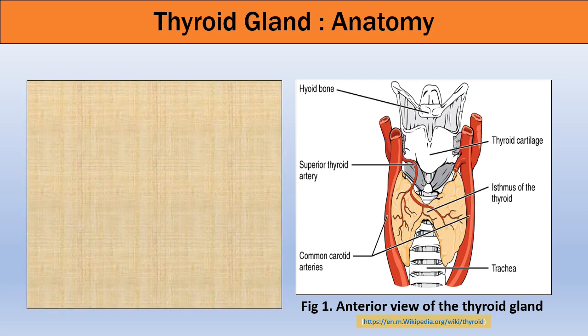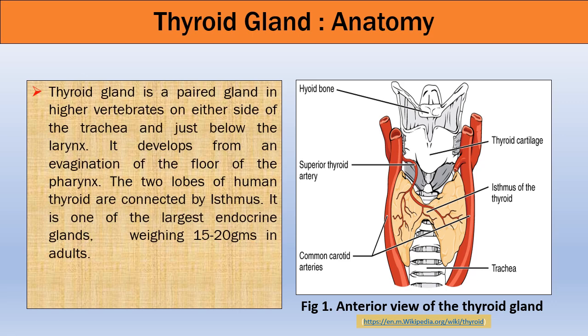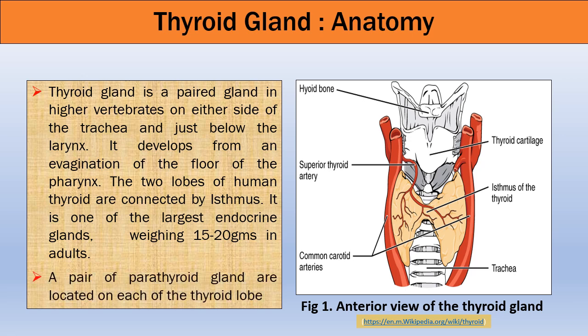Let us talk about the anatomy of the thyroid gland. The thyroid gland, being one of the largest endocrine glands, is a paired gland. It is present on either side of the trachea, just below the larynx. The two lobes of the thyroid gland are joined by a narrow band of tissue called the isthmus. A pair of parathyroid glands are also located on each thyroid lobe.